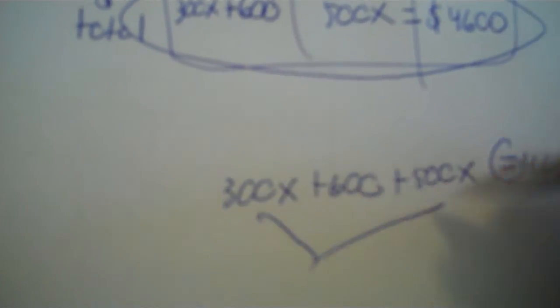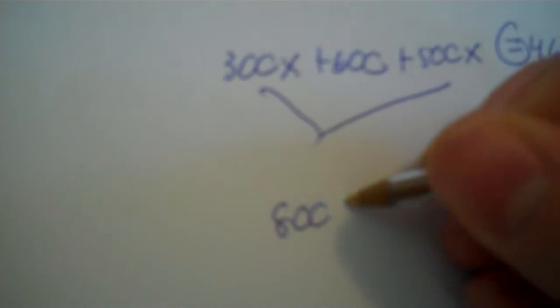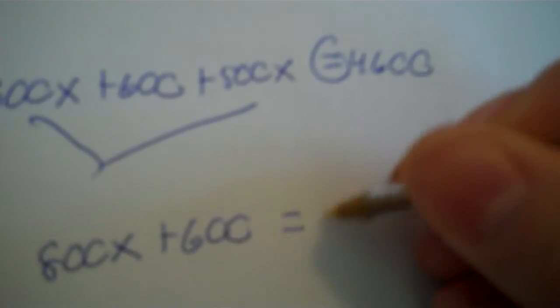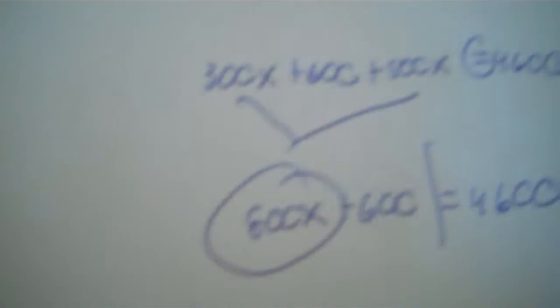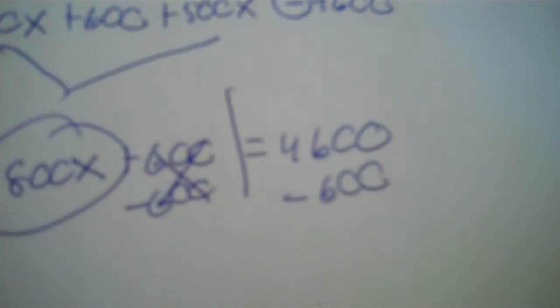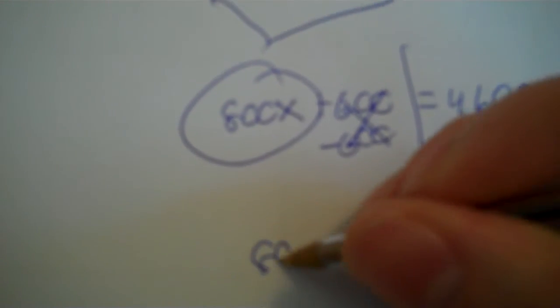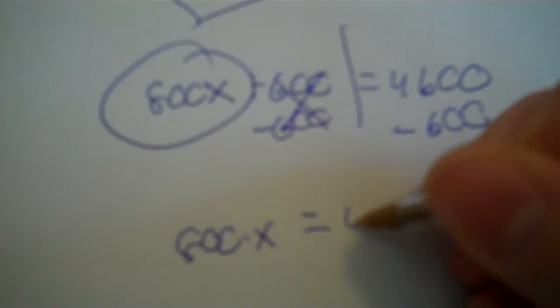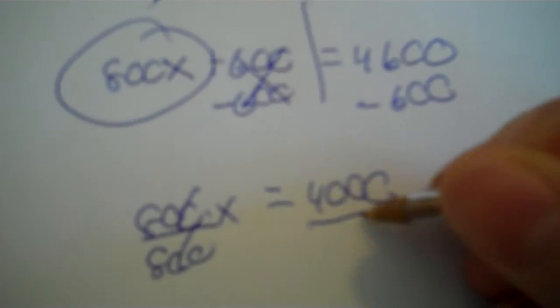V your X's. 300X plus 500X is 800X. Plus 600 equals 4,600. You minus 600, minus 600, that's 4,000. Divide by 800. And that's 5.